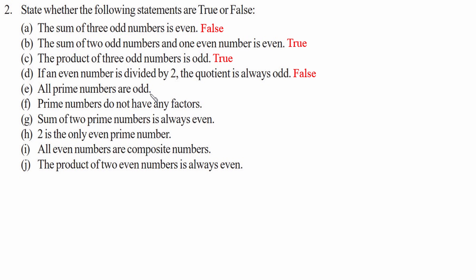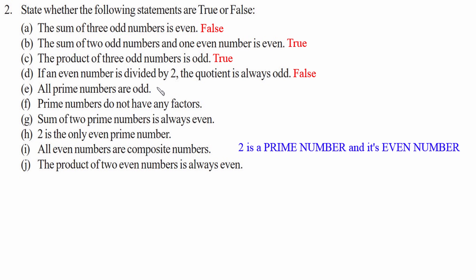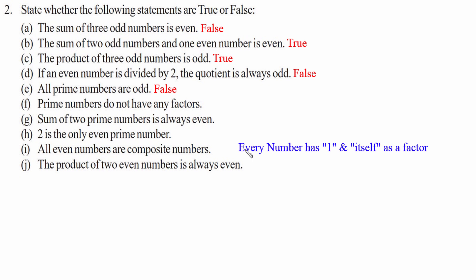2 is a prime number and it is even, therefore statement e is false. Statement f — prime numbers do not have any factors. Every number has 1 and itself as a factor, so we cannot say prime numbers don't have any factors. Therefore statement f is false.